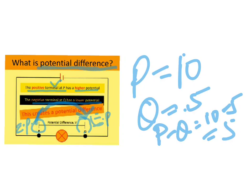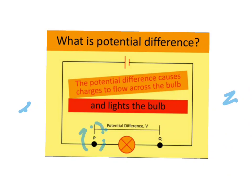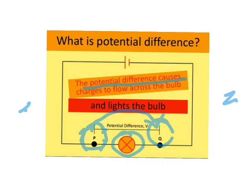Current will start flowing because the high pressure area forces electrons to move towards the lower pressure area. Electrons move from high electric potential towards lower electric potential, and due to this flow of electrons, an electric current is created. Terminal P is the high potential end and terminal Q is the lower potential end, so this flow of electrons will light up a bulb connected in the circuit.